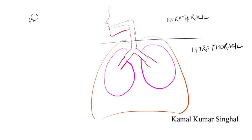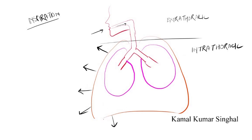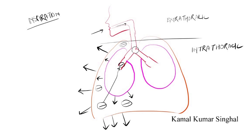During inspiration in an extrathoracic airway obstruction, the chest cage moves out because it has all the muscles. This creates a negative intrapleural pressure, and because of this the lung expands. This negative pressure is then communicated to the airway, and because of this negative pressure, the unsupported extrathoracic airway collapses, creating a stridor.